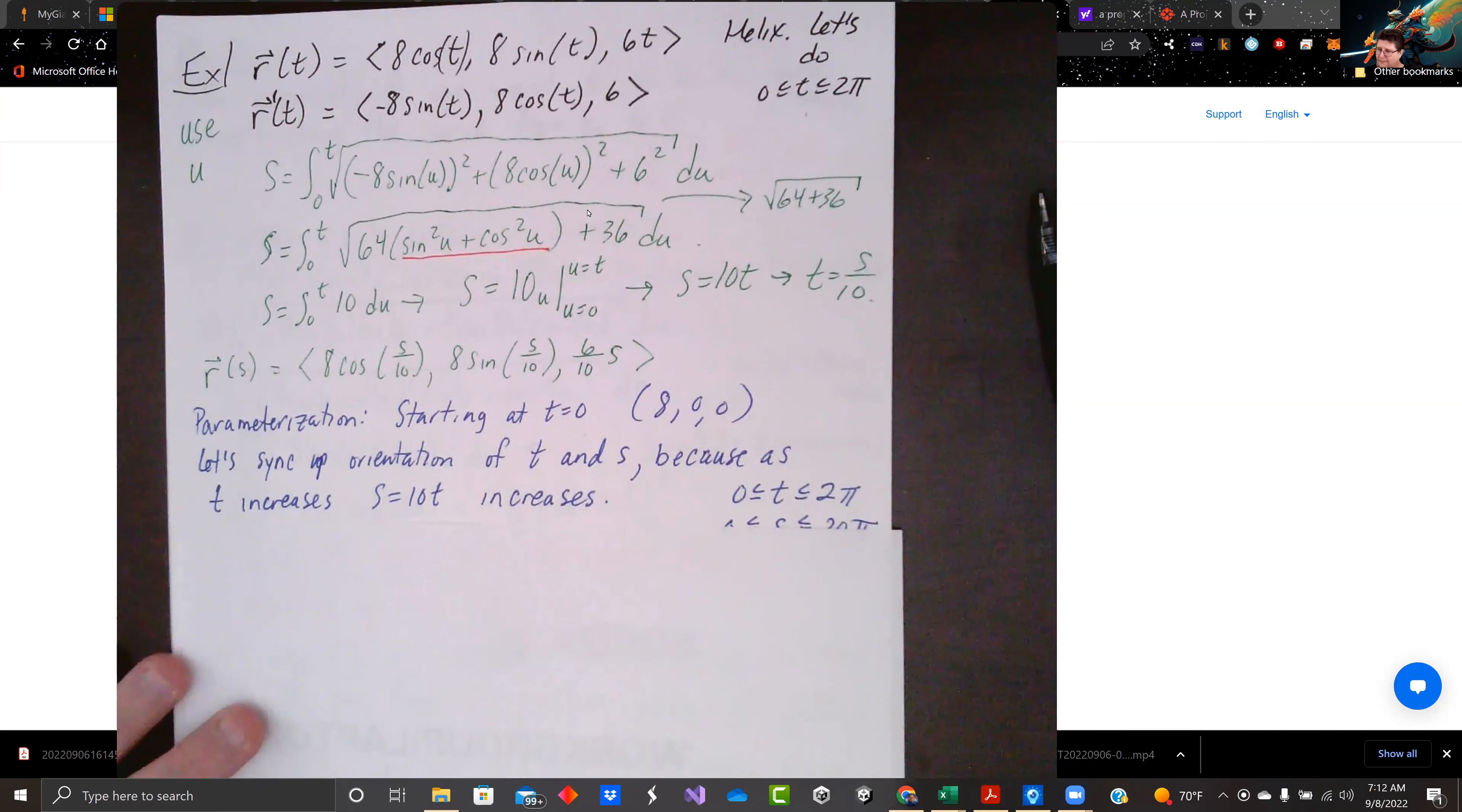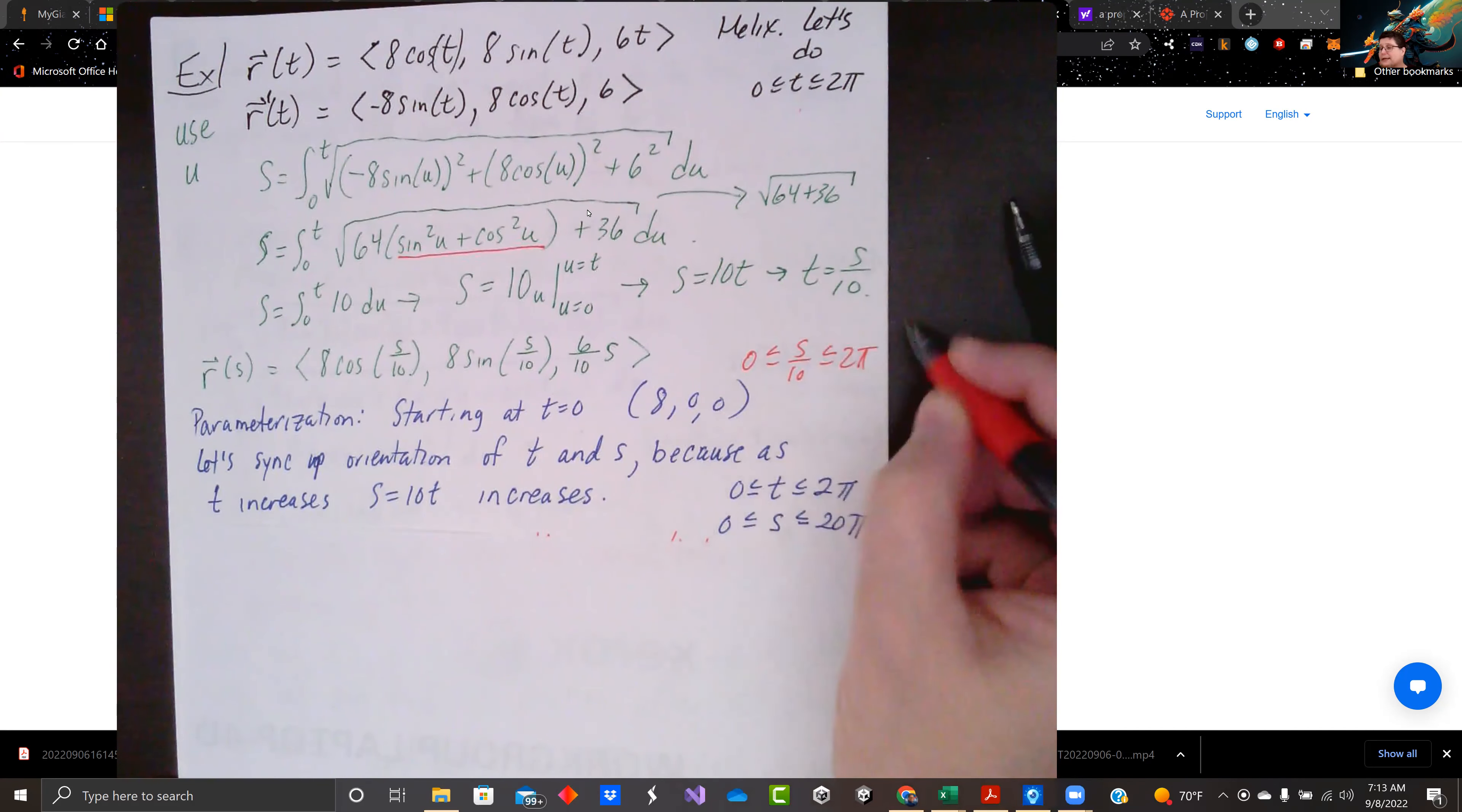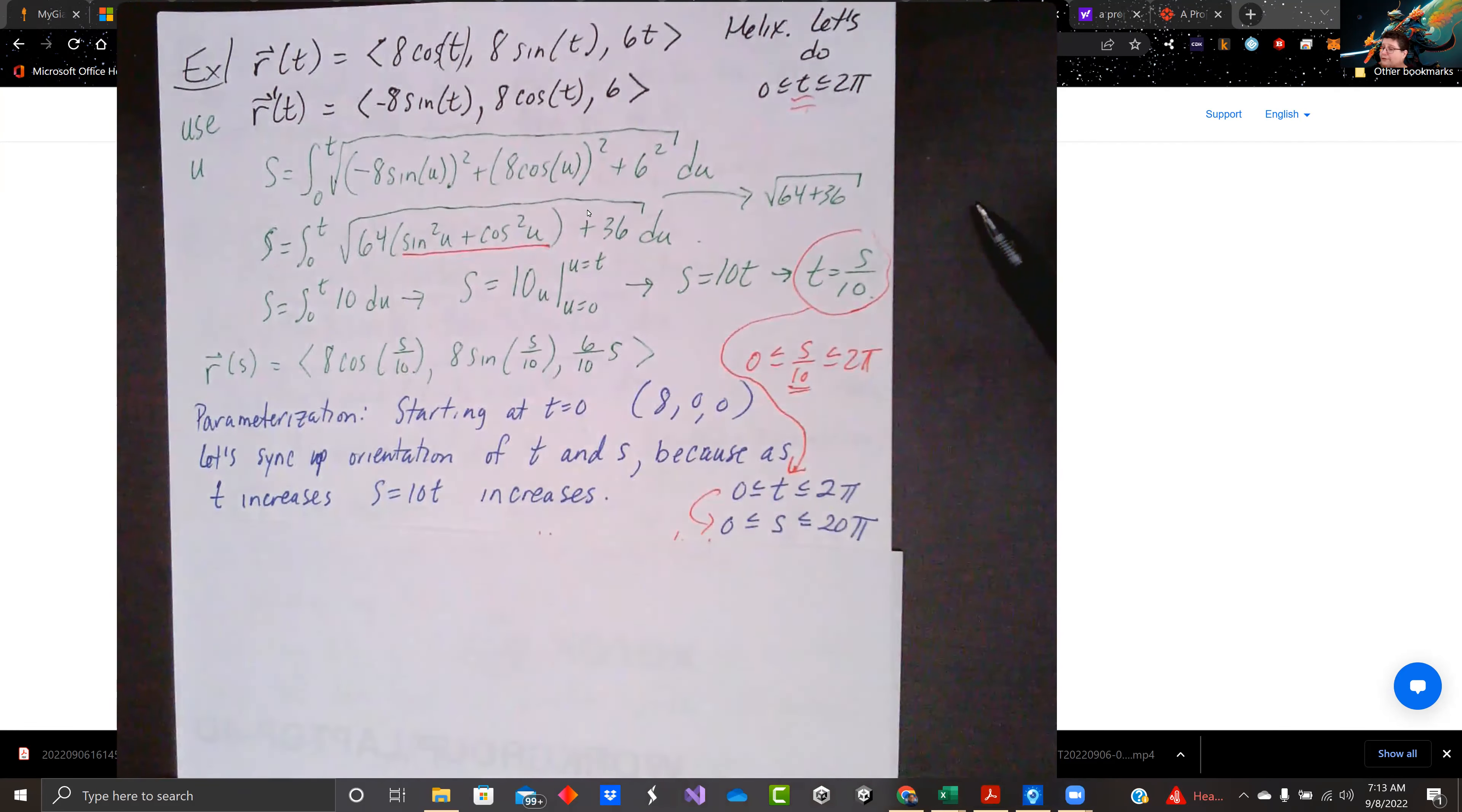T goes up. T is being turned into s equals 10t. So t equals s over 10. If I plug that in here, I've got 0 is less than s over 10, which is less than 2 pi. That's just replacing t with s over 10. Multiply through by 10 on both sides, and we get 0 is less than s, which is less than 20 pi. So that's how you do that. You're just doing the replacement that we had. T equals s over 10 and solving for s.